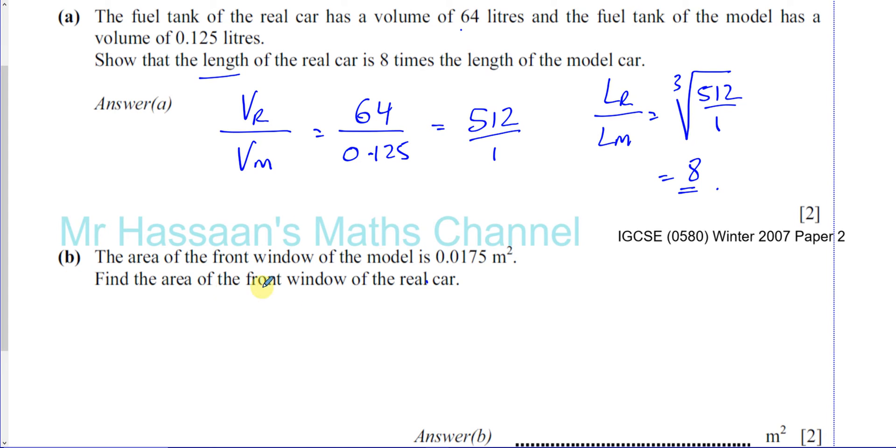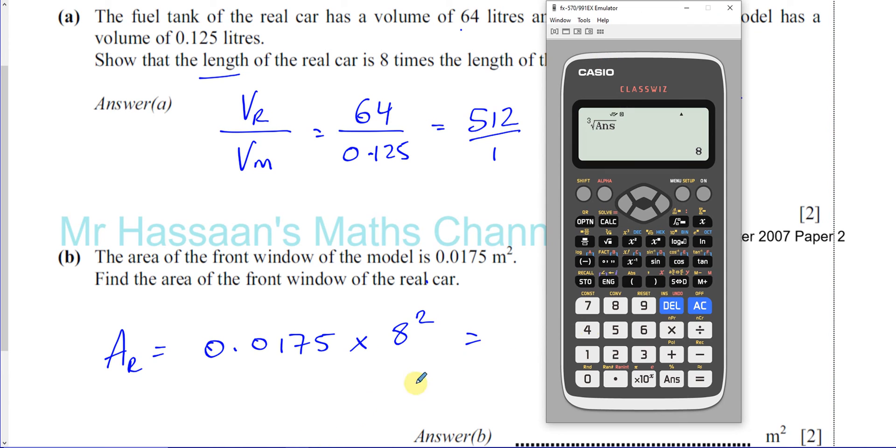So the area of the front window of the real car is going to be the area of the front window of the model car 0.0175 times the ratio of the areas. Now we're going from smaller to bigger, we know the model, we're going to find the area of the real car, so it's going to be times 8 over 1 squared. The square of the ratio of the lengths gives us the ratio of the areas.